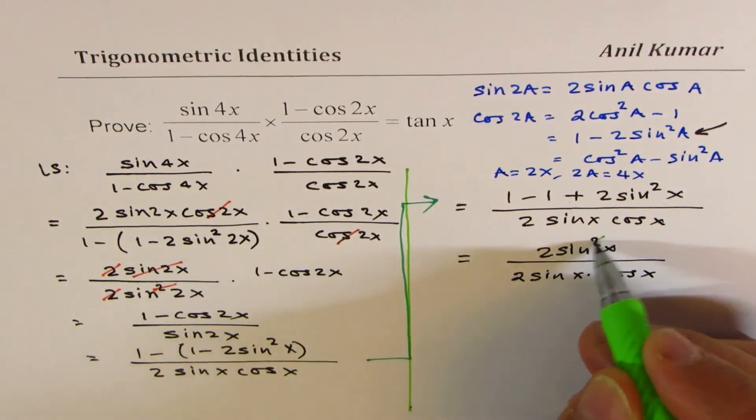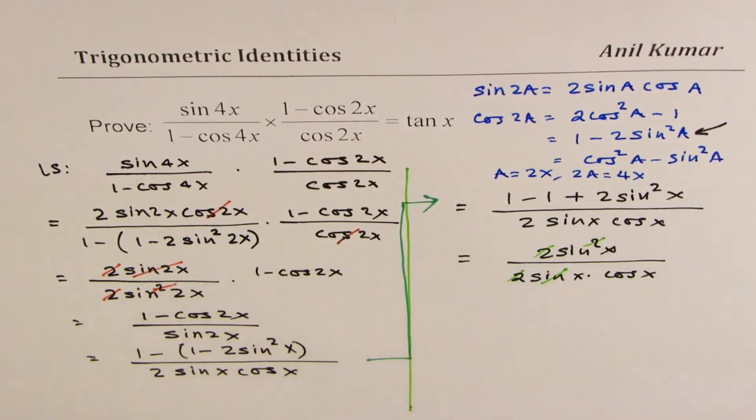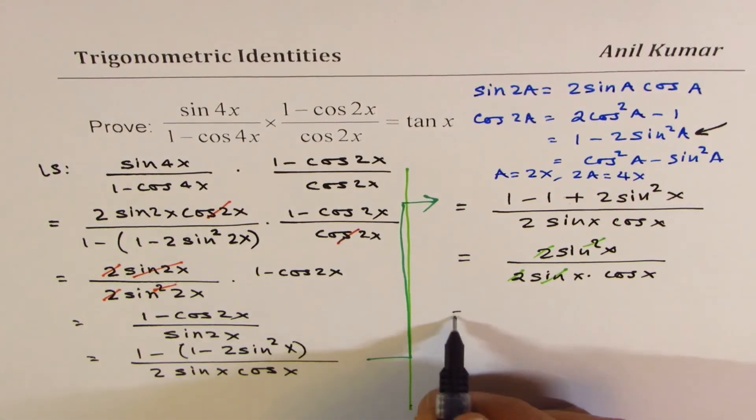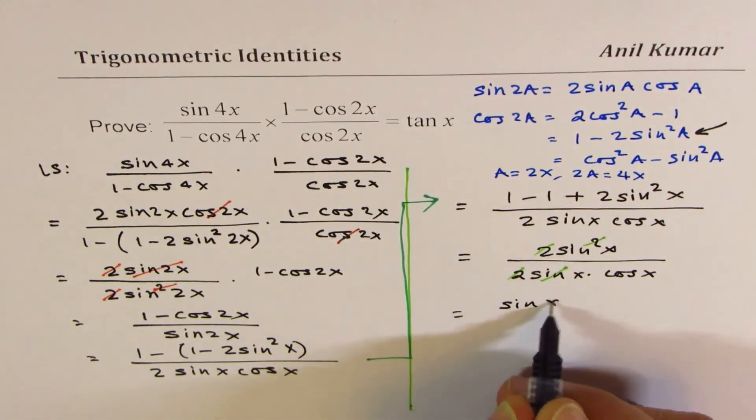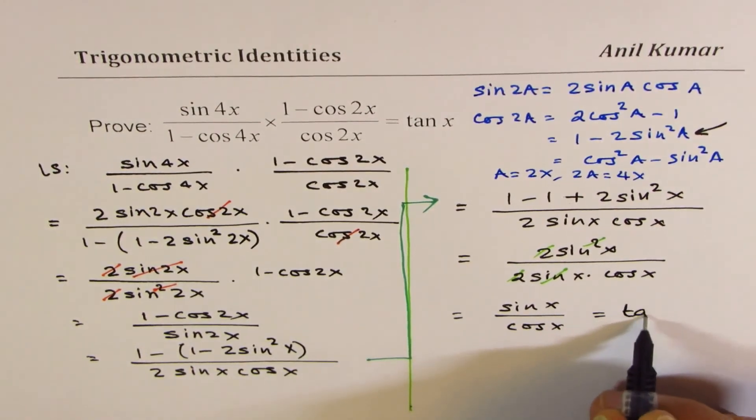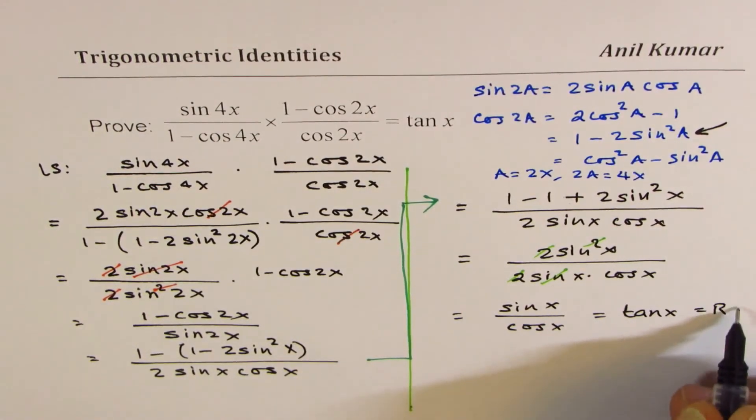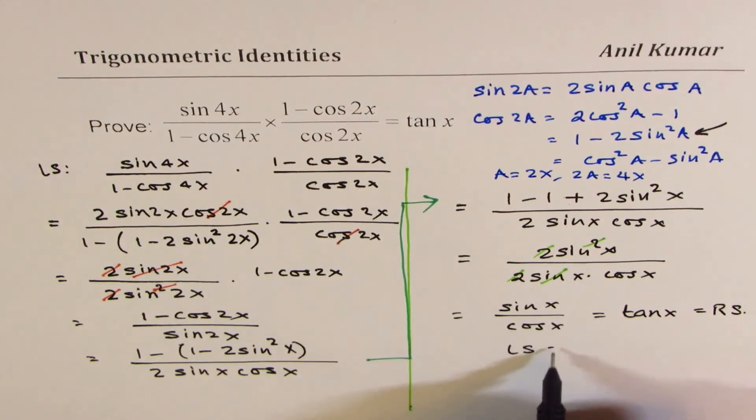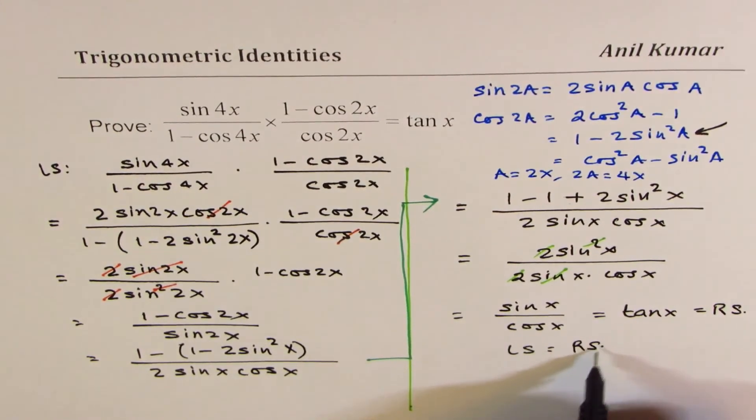So from here, we could cancel sine x and the twos. So we are left with sine x over cos x, which is indeed equal to tan x, or our right side. So we have shown that left side is equal to right side.